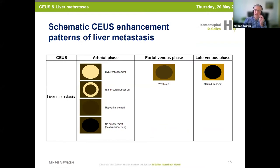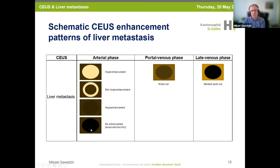I want to propose a schematic CEUS enhancement pattern for liver metastasis. There is the arterial phase, the portal venous phase, and the late phase. You can have hyper-enhancement of the whole lesion, or a rim enhancement, or iso- or hypo-enhancement. In all three cases, you will have a washout and a marked washout in the late phase. Problematic are liver metastases that have no enhancement — completely necrotic or avascular — since if you have no wash-in, you will have no wash-out.